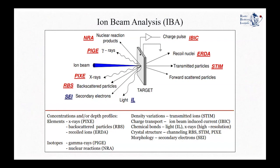Regarding the characterization of materials, there are many techniques collectively called ion beam analysis techniques. Depending on which product of the interaction of the beam with the target we detect, we have different techniques. If we detect nuclear reaction products that are charged particles, the technique is called Nuclear Reaction Analysis (NRA). If we detect gamma rays emitted from nuclear reactions, it is called Particle Induced Gamma Ray Emission (PIGE). If we detect backscattered particles, we speak about Rutherford Backscattering Spectrometry (RBS).